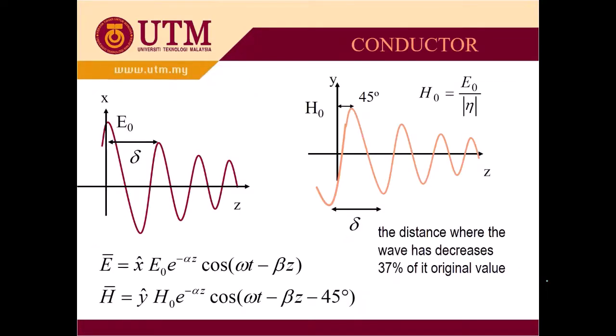When we observe the graph of the electric field and magnetic field, we can see that there is a phase difference of 45 degrees between both fields where the magnetic field lagging 45 degrees behind the electric field. So in terms of the equations, this is the general equation for the electric field. We have E equal to, in the direction of x, E_0,